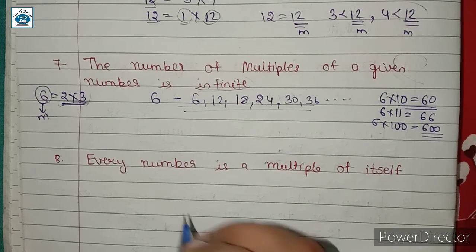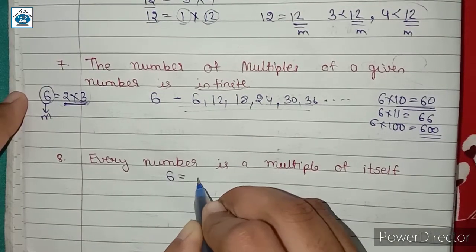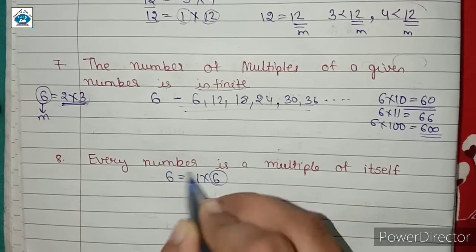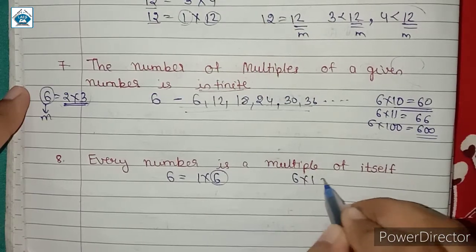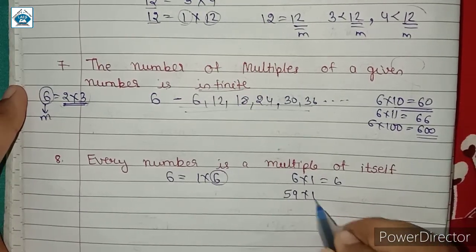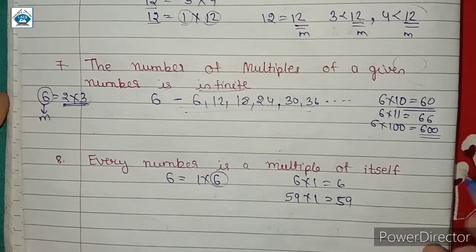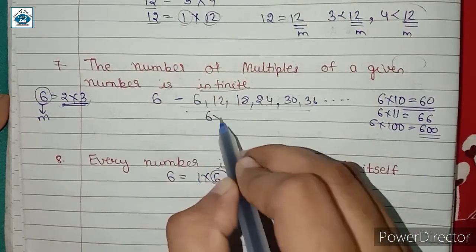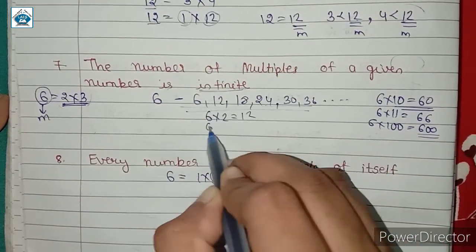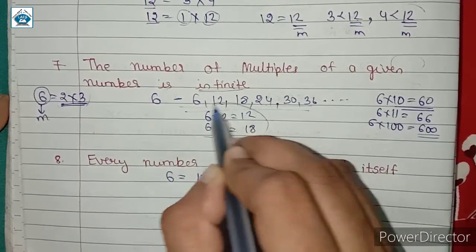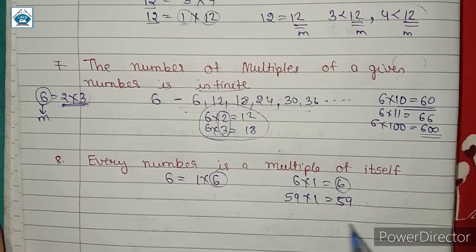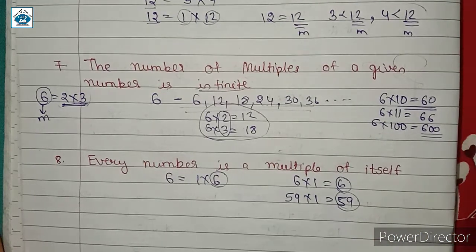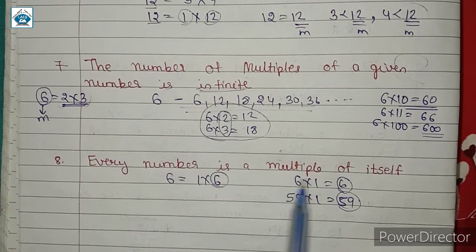Next: every number is a multiple of itself. We can write 6 = 1 × 6, so 6 appears in its own table — 6 ones are 6. Similarly, 59 ones are 59. You can think of multiples as the table of that number: 6 × 2 = 12, 6 × 3 = 18, and so on. Since every number appears in its own table, every number is a multiple of itself.